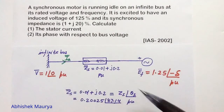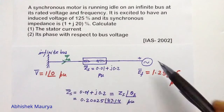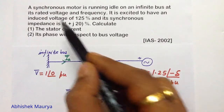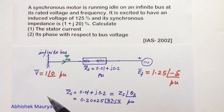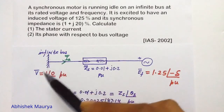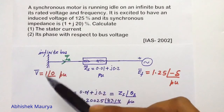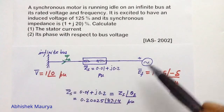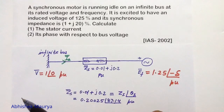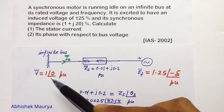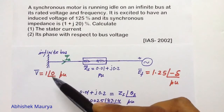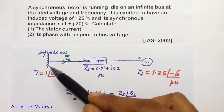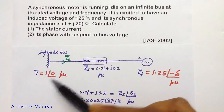According to this problem, we can draw a figure. In this figure, you can see the infinite bus, and this motor is connected to the infinite bus at rated voltage. The meaning of rated voltage in per unit is 1 per unit, so the magnitude of the voltage of the infinite bus is 1 per unit. In solving such problems, we always take the terminal voltage of the motor as a reference, so the angle is taken as 0 degrees. In phasor form, the bus voltage is 1 angle 0 per unit.